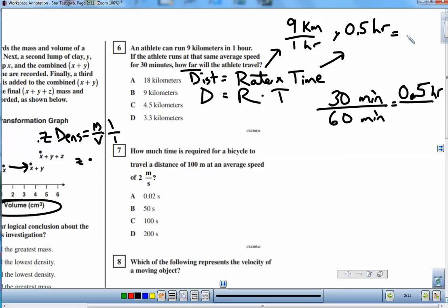So it's 4 and a half, and the units are kilometers, right here, letter C.